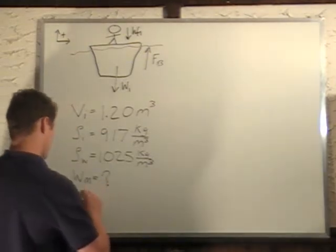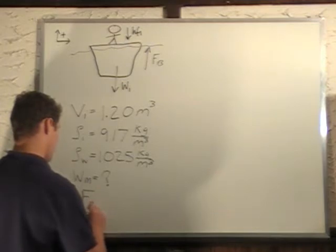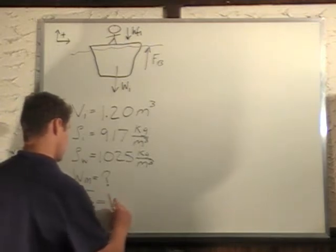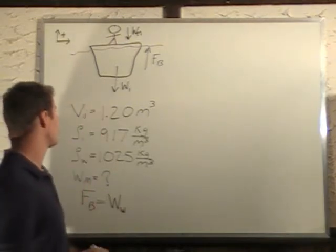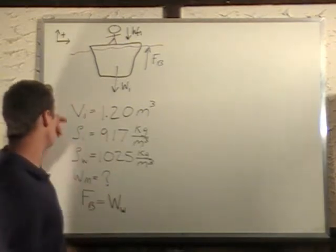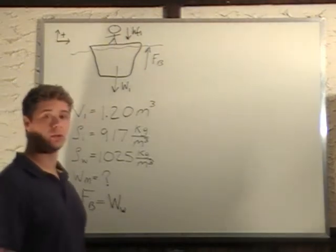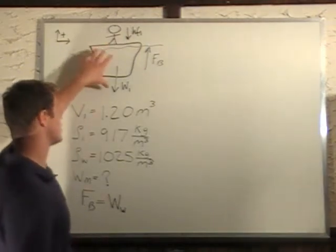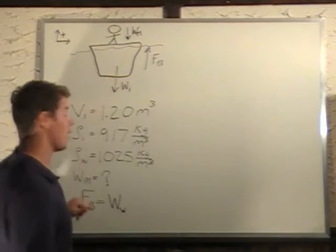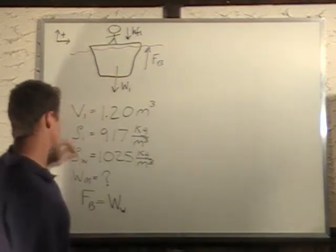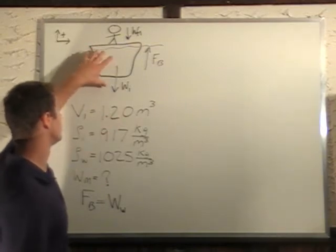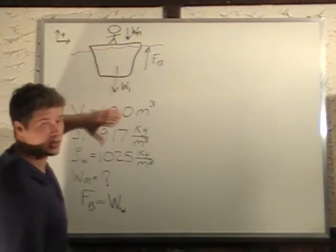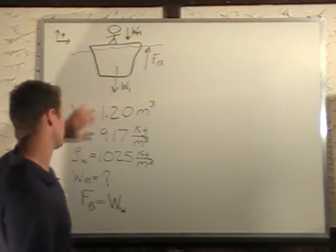So we can say that FB is equal to the weight of the water that is displaced by the iceberg. Now we're given the volume of this iceberg as 1.2 cubic meters, and since it's going to be completely underwater, that volume is going to be the amount of water displaced. So we can use that to calculate the buoyant force.